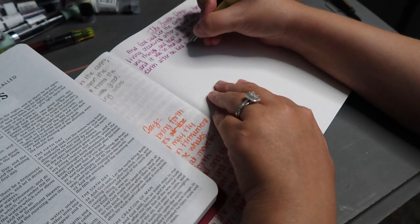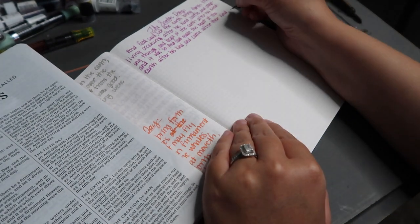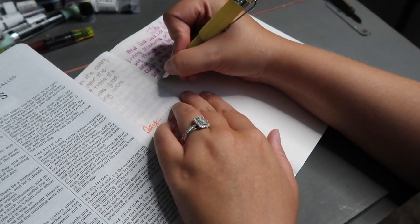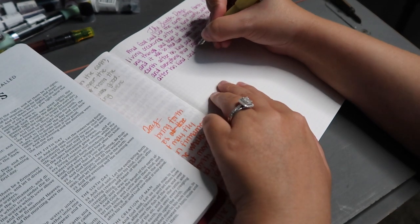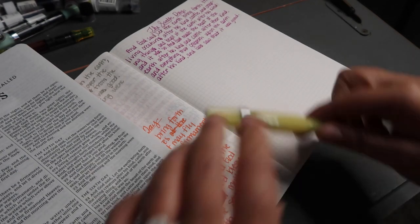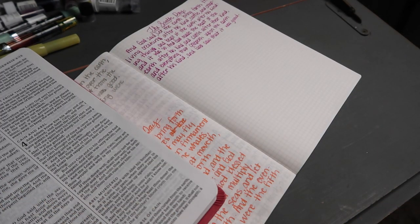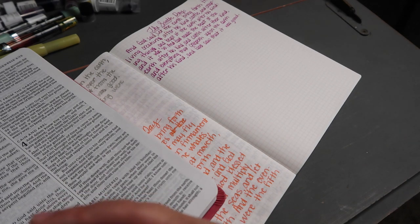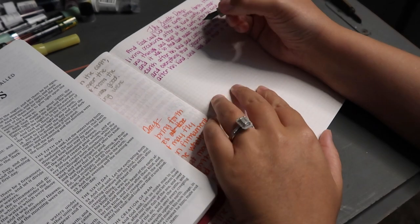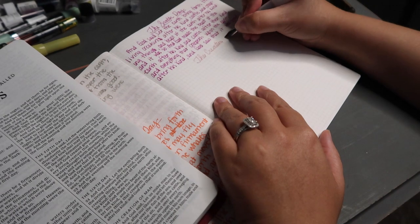And God said, Let the earth bring forth the living creature after his kind, cattle and creeping things, and beast of the earth after his kind. And it was so. And God made the beast of the earth after his kind, and cattle after their kind, and everything that creepeth upon the earth after his kind. And God saw that it was good. And then the creation of man.